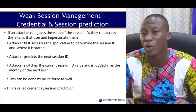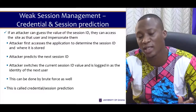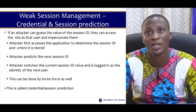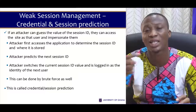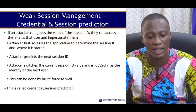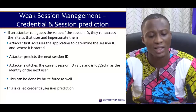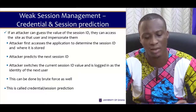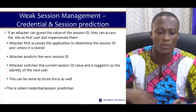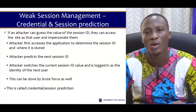The attacker first accesses the application to determine the session ID and where it is stored. The attacker then predicts the next session ID — for instance, if the current session ID is 9, the next will be 10, then 11. The attacker switches to the predicted ID value and is logged in as the next user. This can also be done by brute force using an application that tries to guess the session ID or password, and this is called credential or session prediction.